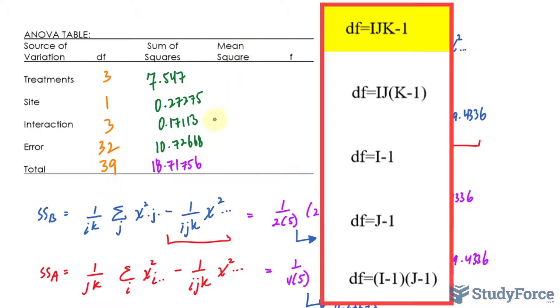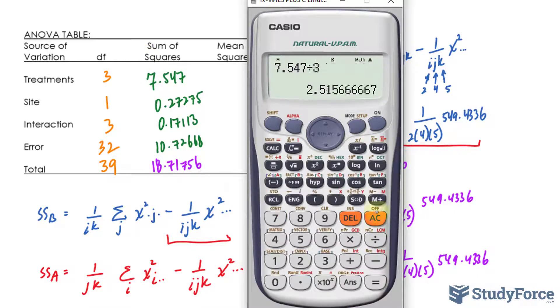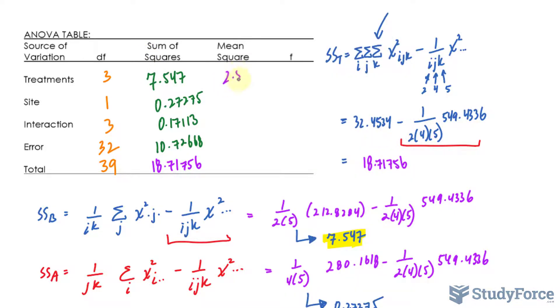To get the mean square, we take each of these values and divide them by their degrees of freedom. So 7.547 divided by 3, let's use our calculator, is 2.51, and the rest should be what you see. You do not find the mean square value for the total, so leave this part empty.